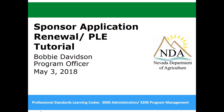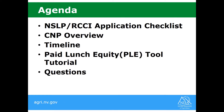If you do have questions, please utilize the questions section in your user guide here, and we will answer the questions at the end. The agenda for today's webinar: we will be going over the NSLP and RCCI Application Checklist, go through each form as listed on the checklist, and then go over how to complete the online portion in CNP. I will then give you a timeline of due dates for the application, and the second half of this webinar will be the Paid Lunch Equity Tool Tutorial.